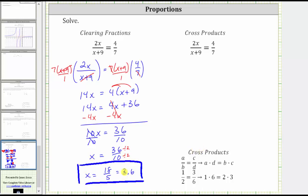And now let's solve the proportion using cross products. If we have a proportion a over b equals c over d, the cross products are a times d and b times c, and a times d will always equal b times c.